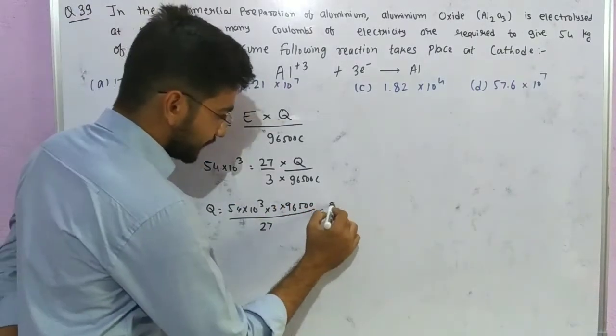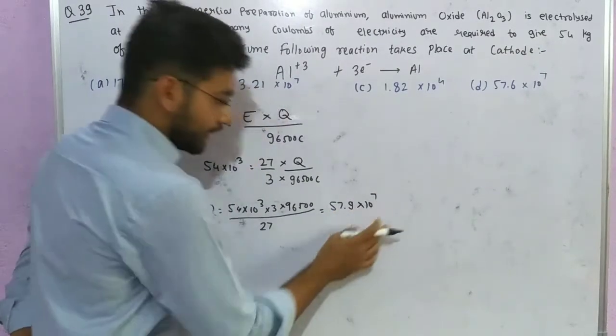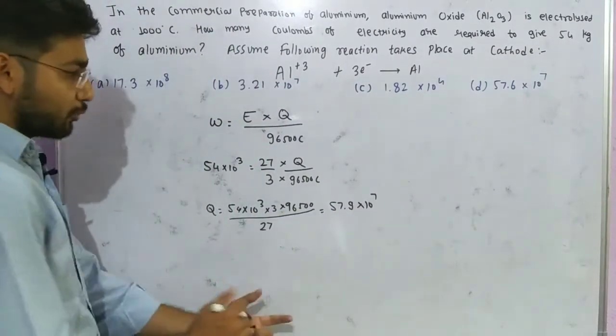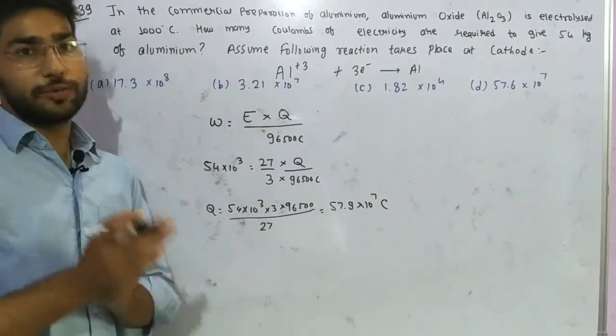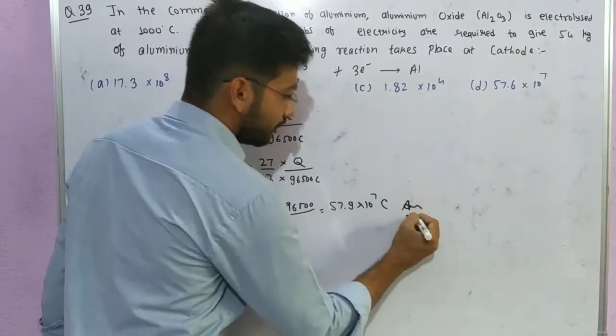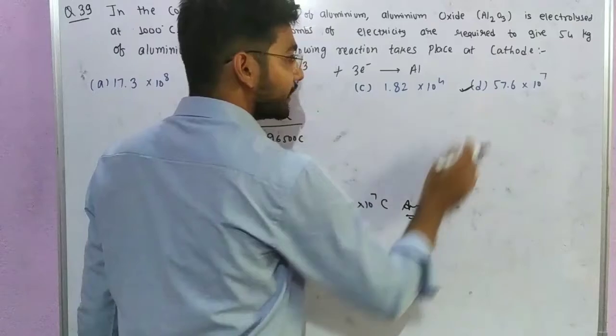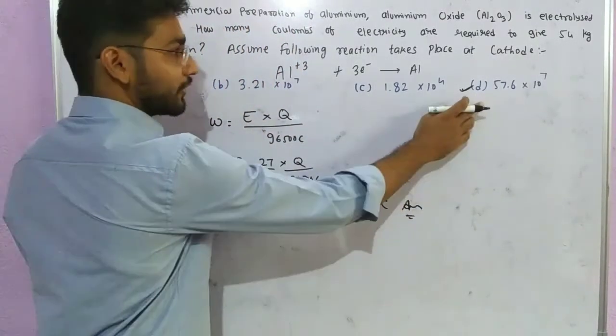The answer I got is 57.9 times 10 to the power 7 coulombs. This is the charge required to deposit 54 kilograms of aluminum. This is your answer. Checking the options, option D is the correct option because it matches our answer.